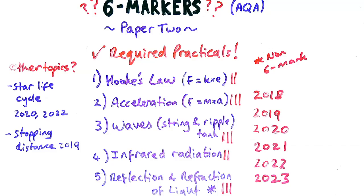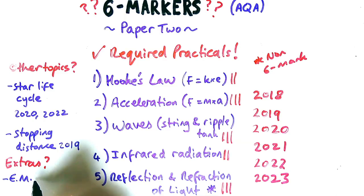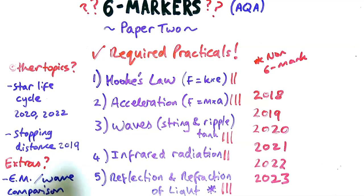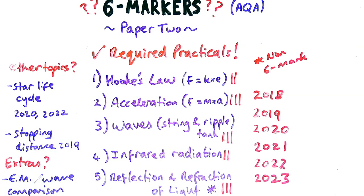Combined science, I've also had a six mark about stopping distance, which could come up again. In terms of extra, in addition to this, it wouldn't be that surprising if you could have one about the electromagnetic spectrum or comparing waves. For example, comparing ultrasound to x-rays or comparing different parts of the EM spectrum.